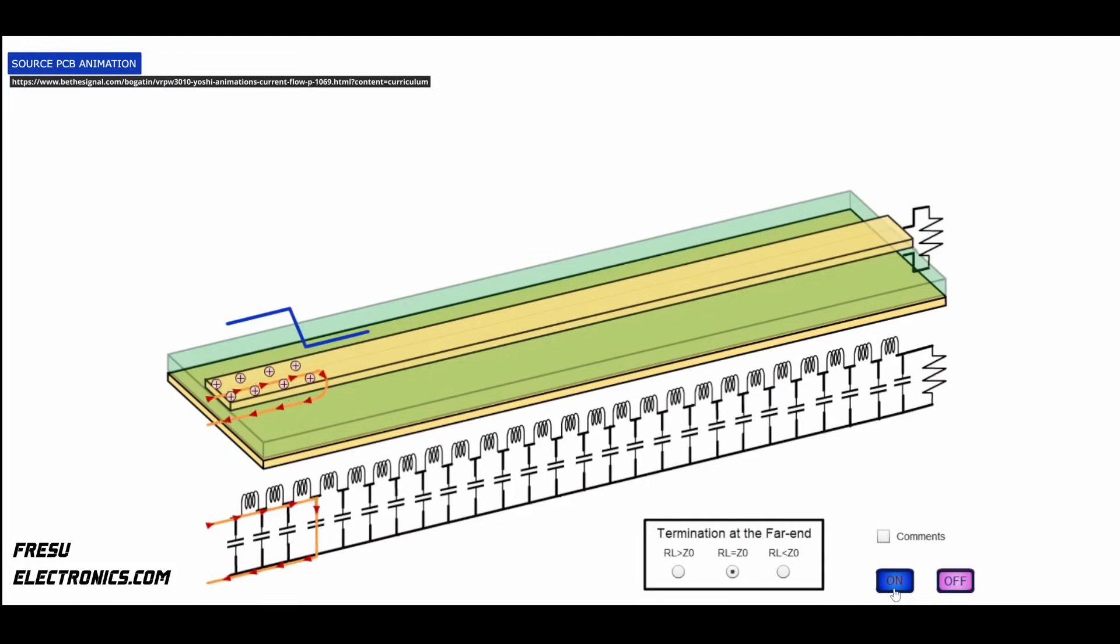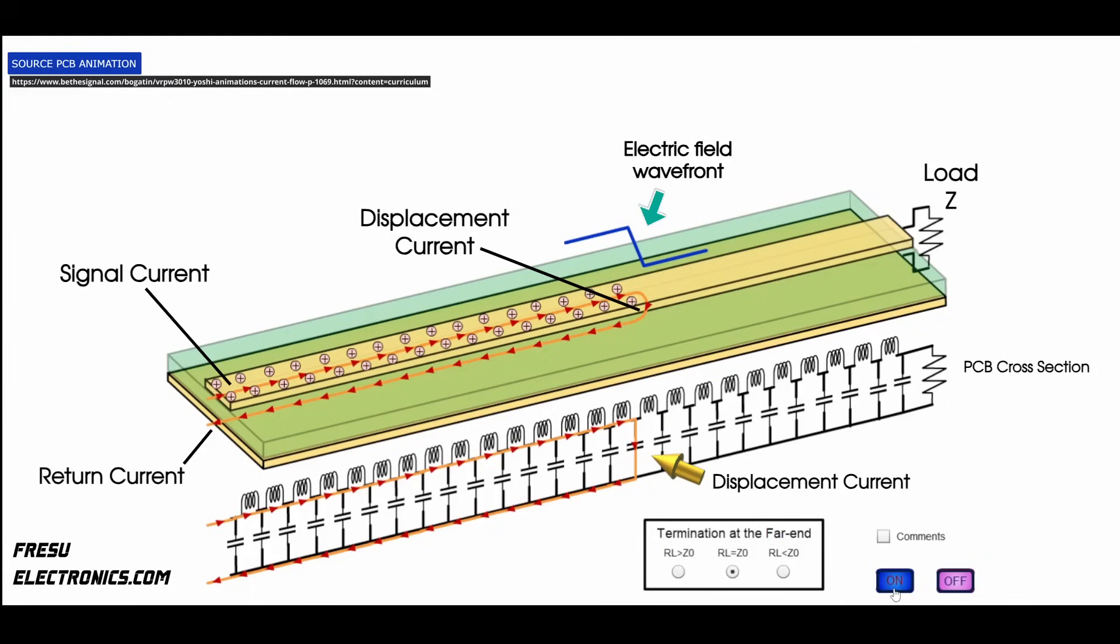In this situation, we see Maxwell's equations in action. First, there's the conduction current, which includes the signal current on the top trace and the return current on the bottom. Second, we have the displacement current, which arises from the changing electric field at the front of the signal wave.